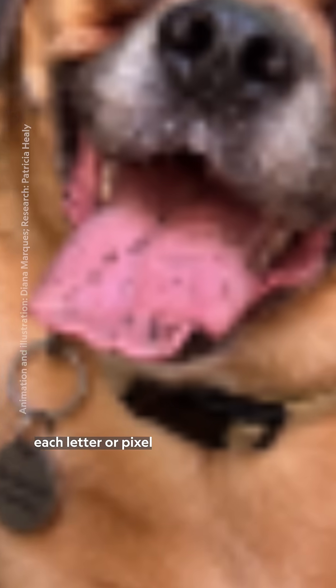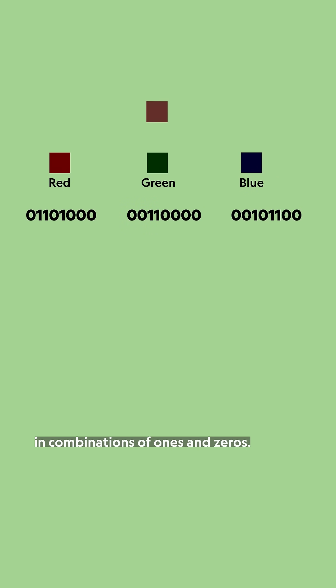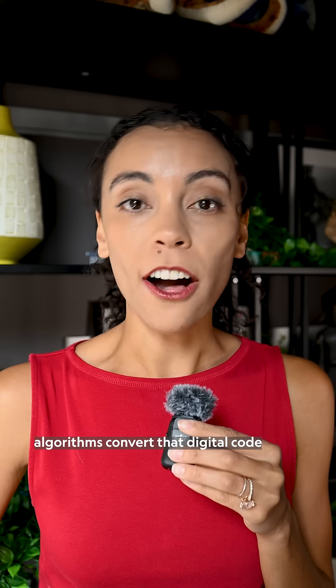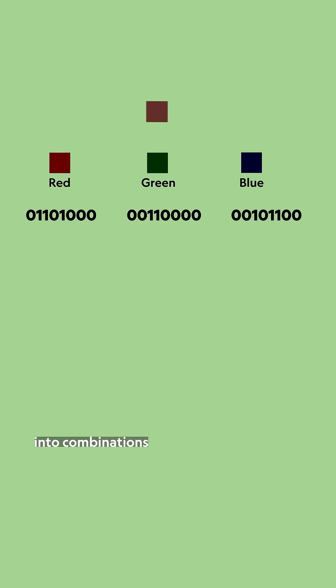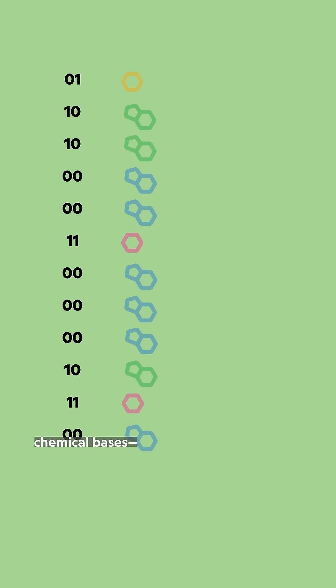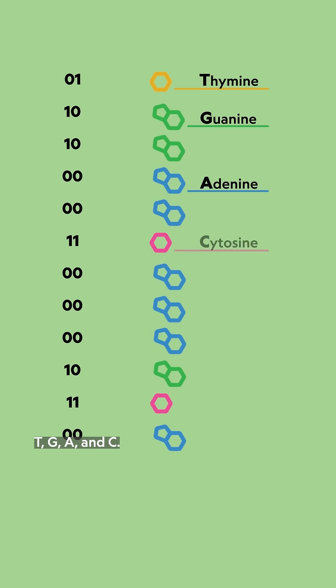Computers store each letter or pixel of digital data in combinations of ones and zeros. To store that information on DNA, algorithms convert that digital code into combinations of the four letters that represent DNA's chemical bases: T, G, A, and C.